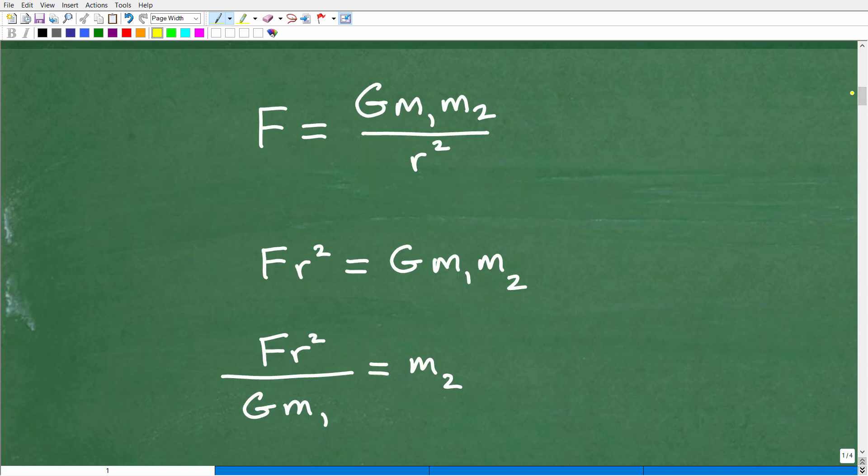All right, so first thing that you want to recognize is that this is one fraction equal to another fraction. You could see that this is a fraction. We call this a rational expression. It's a fraction with variables, but it's a fraction. So F, we can write anything as a fraction, F over 1.